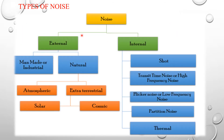Noise is classified into two types: external noise and internal noise. External noise is further classified into man-made or industrial noise and natural noise. Natural noise is further classified into atmospheric noise and extra-terrestrial noise, which includes solar noise and cosmic noise. Internal noises include shot noise, high-frequency or transit-time noise, low-frequency or flicker noise, partition noise, and thermal noise.